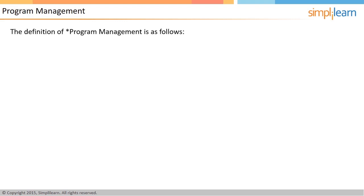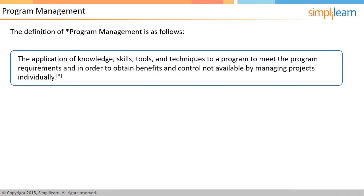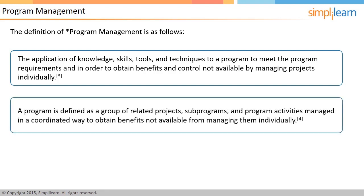Program management is defined as the application of knowledge, skills, tools, and techniques to a program to meet the program requirements and to obtain benefits and control not available by managing projects individually. As defined in the PMBOK guide, a program is a group of related projects which, when managed as a group in a coordinated fashion, provides benefits and control not available while managing them individually. These benefits could be from decreased risk, economies of scale, improved management of dependencies, delivery of additional capabilities, and optimal utilization of shared resources.